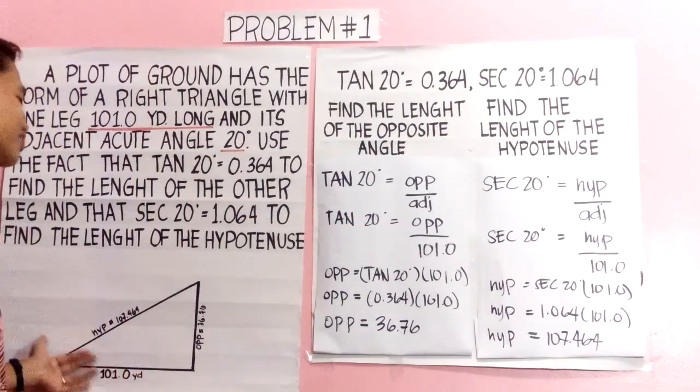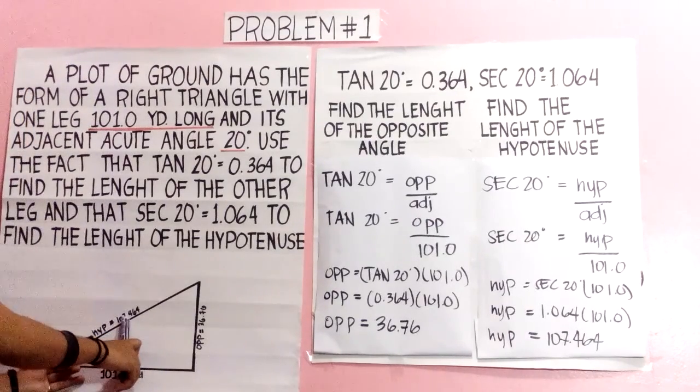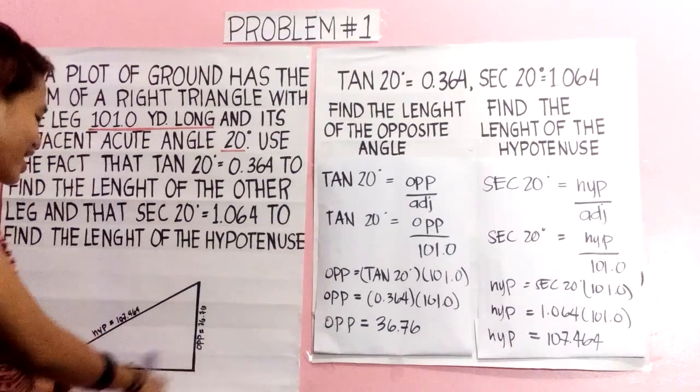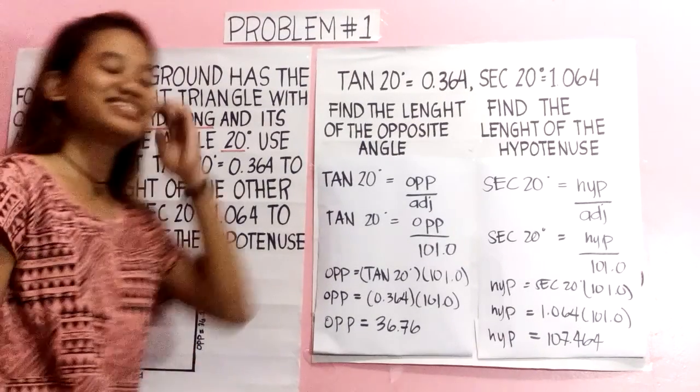We have here in the figure that the hypotenuse equals 107.464 and the opposite side equals 36.76.